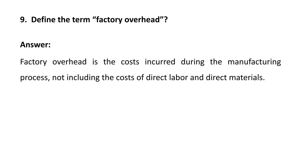Next question: explain the term factory overhead. Factory overhead is the cost incurred during the manufacturing process, not including the cost of direct labor and direct material. So factory overhead is the cost incurred during manufacturing, and it does not include direct labor cost and direct material cost.